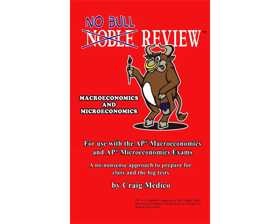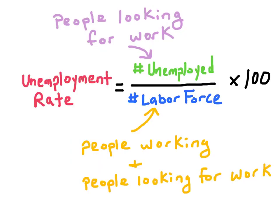Welcome to the Noble Review Session for students of AP Macroeconomics. Today we're going to look at an economy's unemployment rate and how to calculate it. The unemployment rate is equal to the number of people unemployed divided by the number of people in the labor force, times 100.